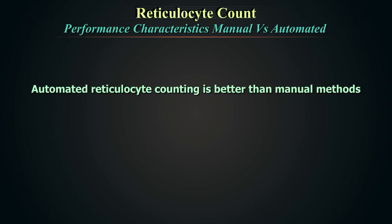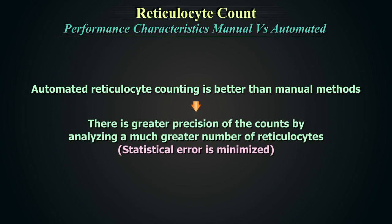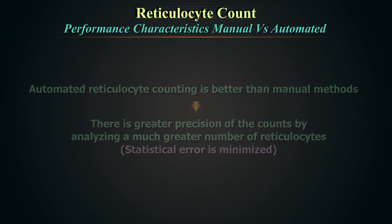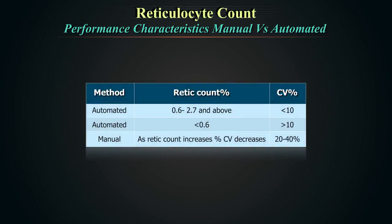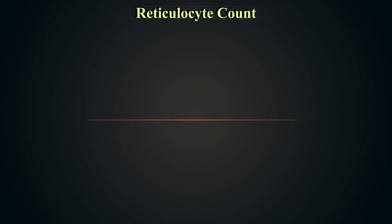Automated reticulocyte counting is better than manual methods due to greater precision. By analyzing a much greater number of reticulocytes, the statistical error is minimized. When reticulocyte percentages are between 0.6% and 2.7%, many studies have yielded a CV of less than 10% for automated counting, with a higher CV for counts lower than 0.2%. Visual microscopy has a CV ranging from 20% to 40%.